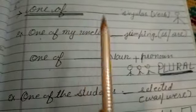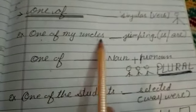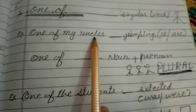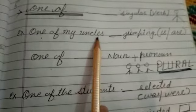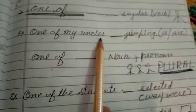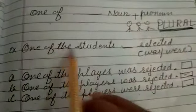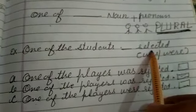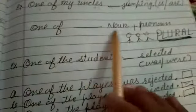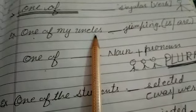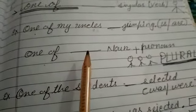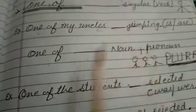One thing to keep in mind: whenever you use 'one of,' the noun or pronoun that follows it should be plural. For example: 'one of my uncles' — 'uncles' is plural. Or 'one of us' — 'us' is a plural pronoun. Students often make this mistake in writing. Next: 'One of the students __ selected.' Singular verb applies, so: One of the students was selected.